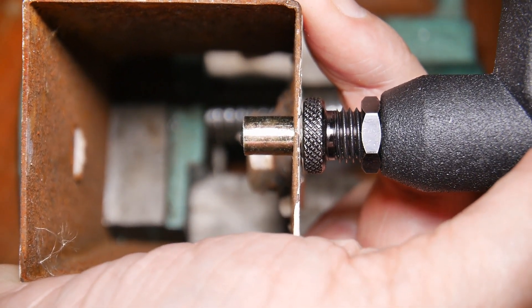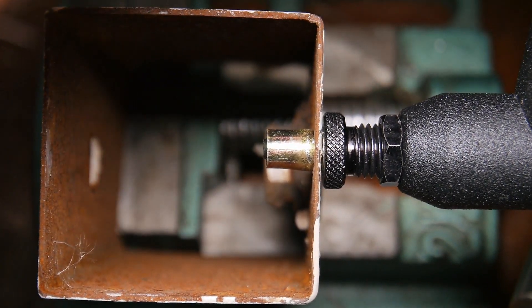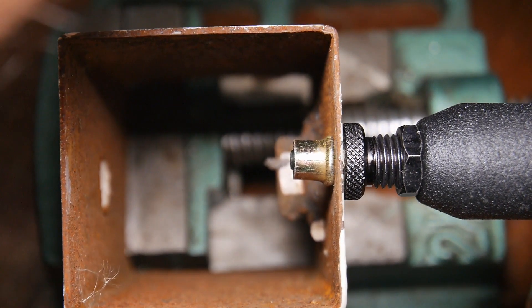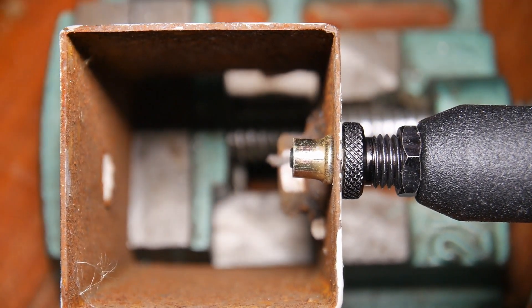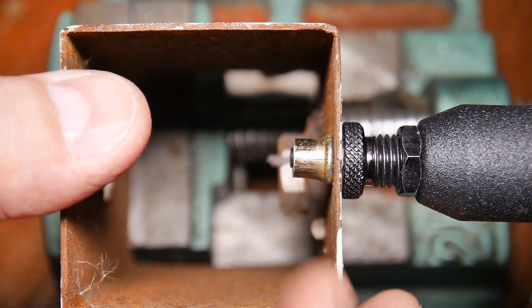You get it nice and square, and squeeze. And you can see the collar expanding. And it's not going to go bang like a pop rivet. It just forms that nice little collar on there.